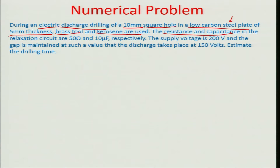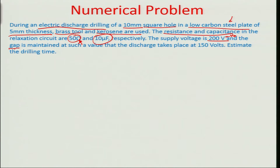The resistance and capacitance of the relaxation circuit are defined as 500 ohms and 10 microfarads respectively. This 500 ohms is definitely above the minimum resistance required, and there is no arcing but only sparking in the circuit. The supply voltage V₀ is around 200 volts, and the gap is maintained such that discharge happens at a discharge voltage Vd of about 150 volts.